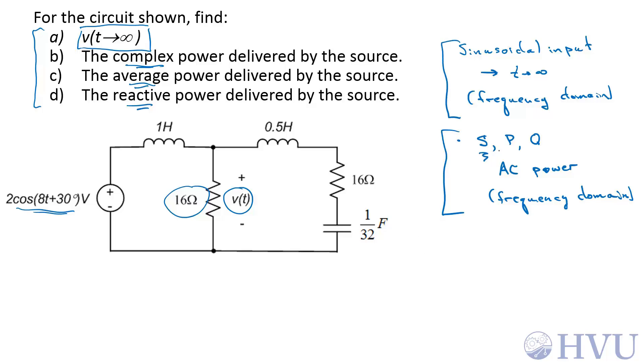In order to find the complex power, the average power, and the reactive power delivered by the source, we're going to need this current out of the source I, that's not really dependent upon V(t). So part A is really just a problem finding a steady-state sinusoidal response,